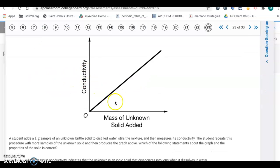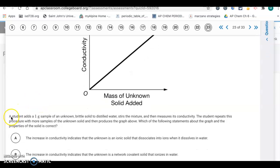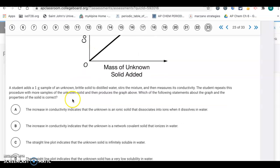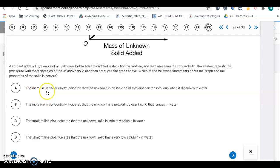Question 23. We have a graph of mass of unknown solid added versus conductivity with a linear relationship. A student adds one gram samples of an unknown brittle solid to distilled water, stirs, and measures conductivity. The student repeats this procedure and produces the graph above. Which of the following statements about the graph and properties are correct? As we dissolve more of the solid, it's more conductive. It's producing charged particles in solution. The increase in conductivity indicates the unknown is an ionic solid that dissociates into ions when it dissolves in water. Letter A is the correct choice.